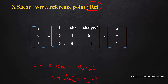Okay. Then x-dash is x plus Shx into y minus y-reference. We will derive x-dash and y-dash accordingly. So this gives us the homogeneous representation of shear with respect to a reference point.